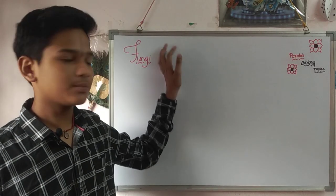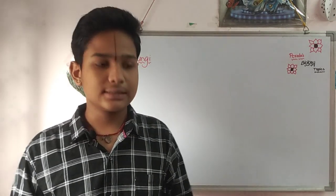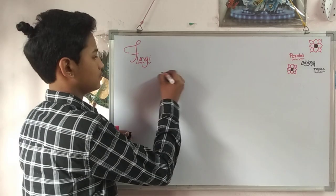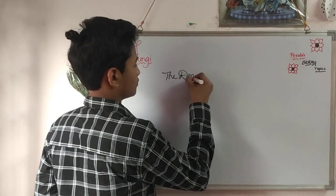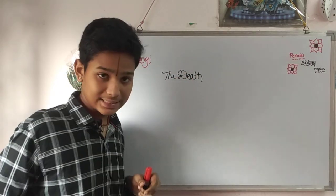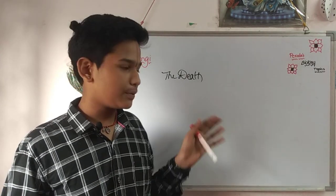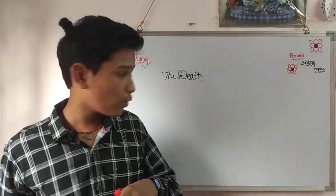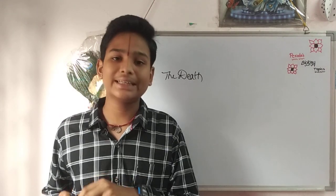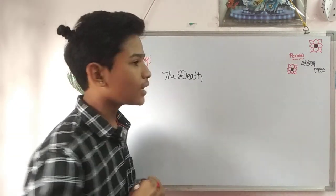Hi friends, welcome back to my YouTube channel. In the last session we discussed about reproduction in flowers. In today's session we are going to discuss about the fungi. Fungi are the death eaters — these creatures cannot make their own food; they feed on dead and decaying matter.